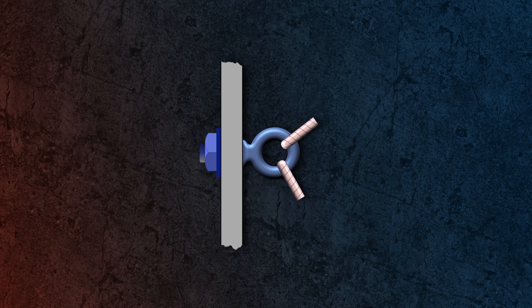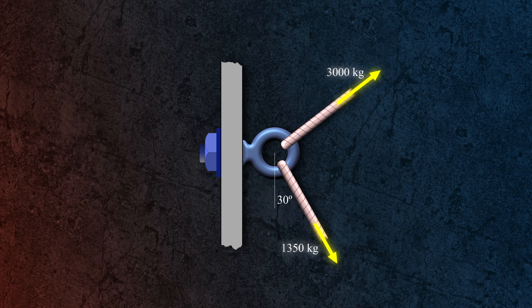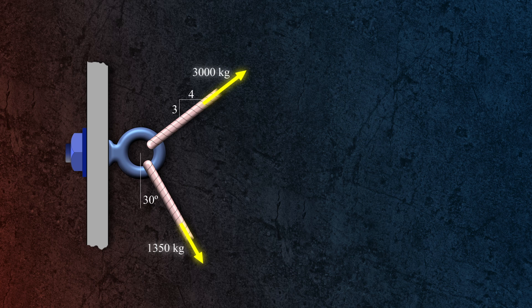Next, we have an eyebolt fixed horizontally with two ropes connected to it. One rope is carrying a 1350 kg load at a 30 degree angle from the vertical, and the second rope is carrying a 3000 kg load with a slope ratio of 3 is to 4. Let's find the resultant of these two forces.